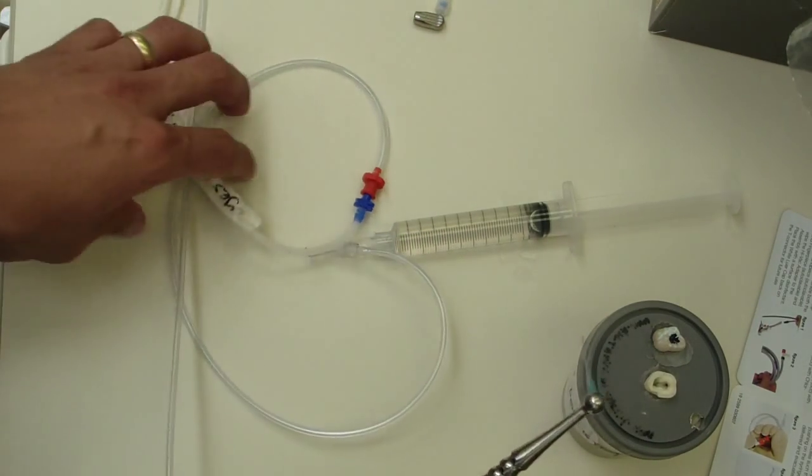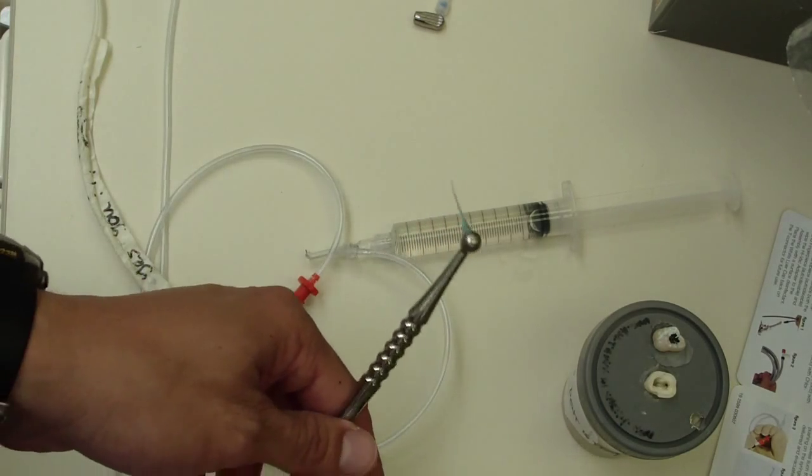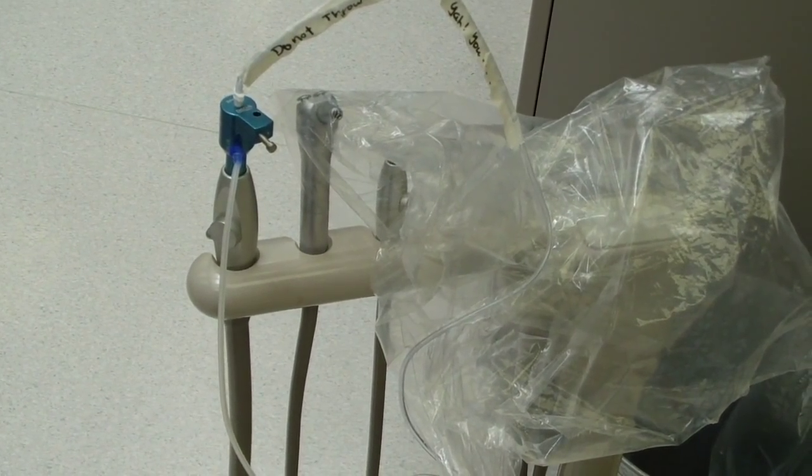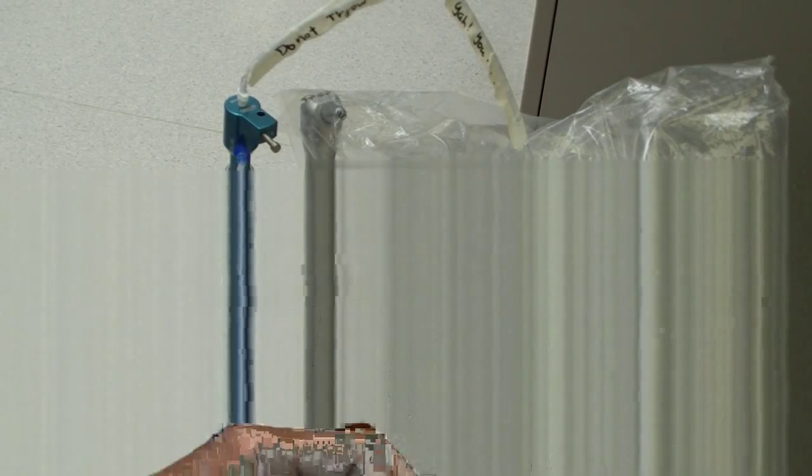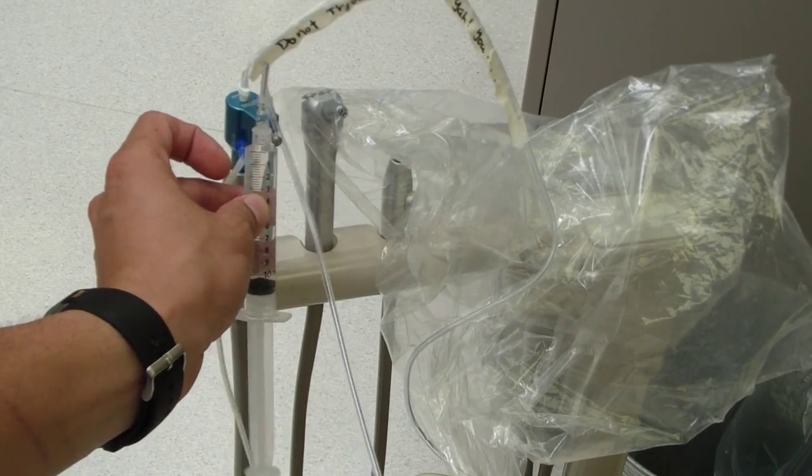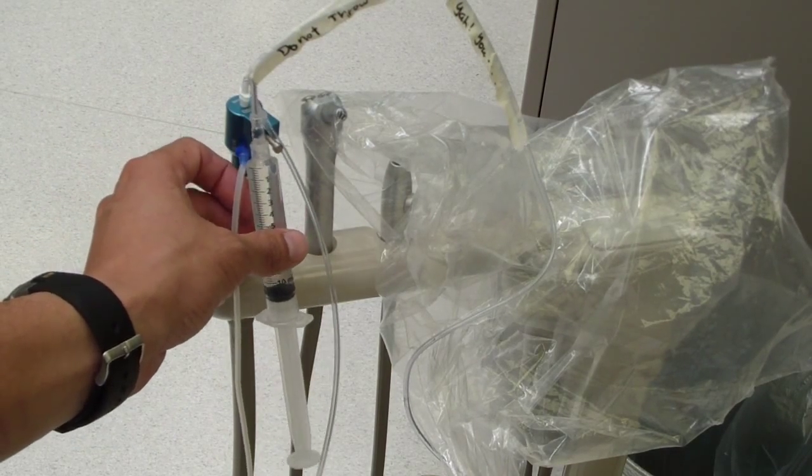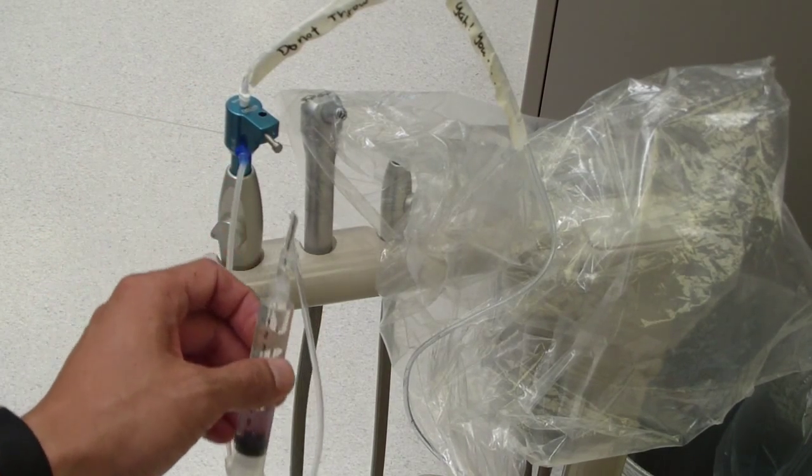So you've got it hooked up to the suction. Let me just show you here. There it is hooked up to the suction and your dental assistant connects it right here. So you hook up your irrigation, whatever that might be - chlorhexidine, sodium hypochlorite, EDTA.